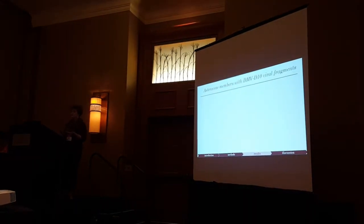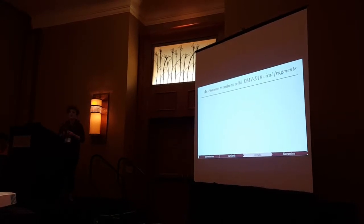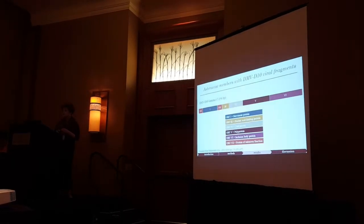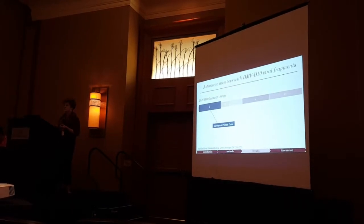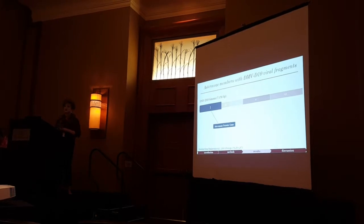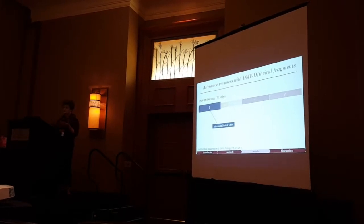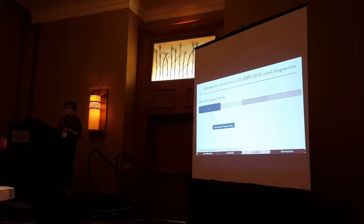We found really interesting results. We saw a lot of viral fragments of DMVD-10 in our plant samples. First, to orient you to the DMVD-10 genome: it's around 7,000 base pairs and consists of about six genes — six open reading frames. We focused on open reading frame number one, the movement protein gene, which changes the plasmodesmata size exclusion limit so the virus can move its viral DNA from cell to cell.